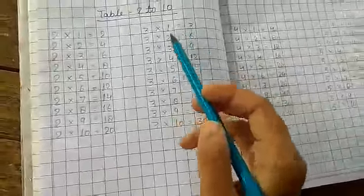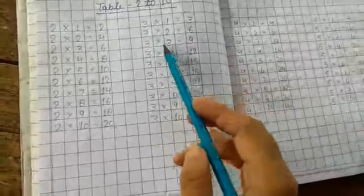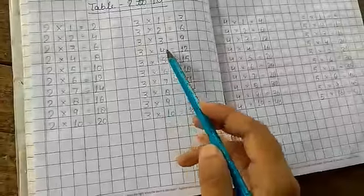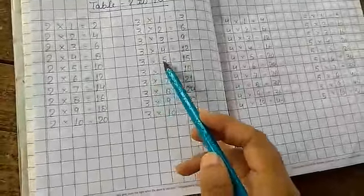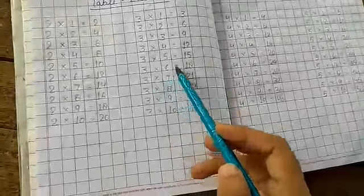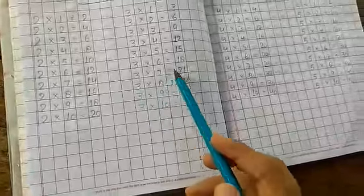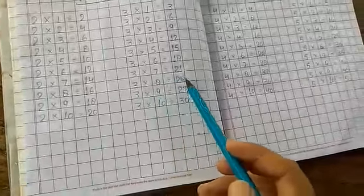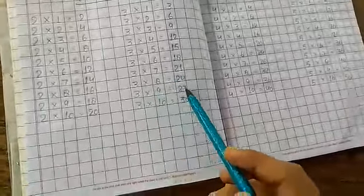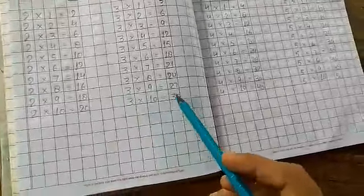3 1's are 3, 3 2's are 6, 3 3's are 9, 3 4's are 12, 3 5's are 15, 3 6's are 18, 3 7's are 21, 3 8's are 24, 3 9's are 27, 3 10's are 30.